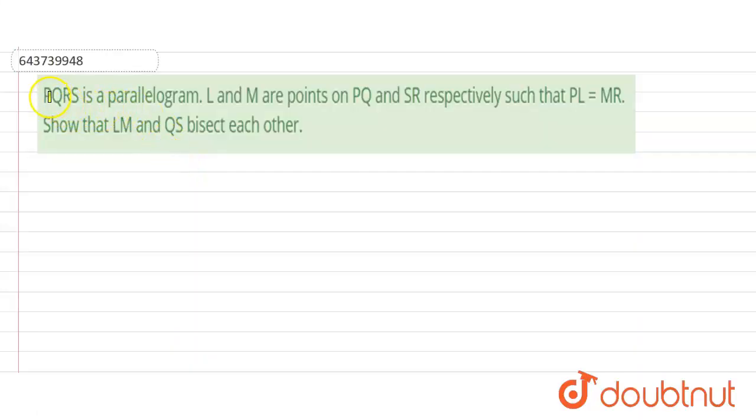So hello students, in this problem we have given PQRS is a parallelogram and L and M are the points on PQ and SR respectively such that PL is equals to MR. Then we have to prove that LM and QS bisect each other.